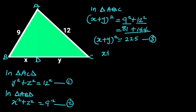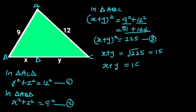From this equation, taking the square root of both sides will give us x plus y is equal to 15. Let this be equation 4.